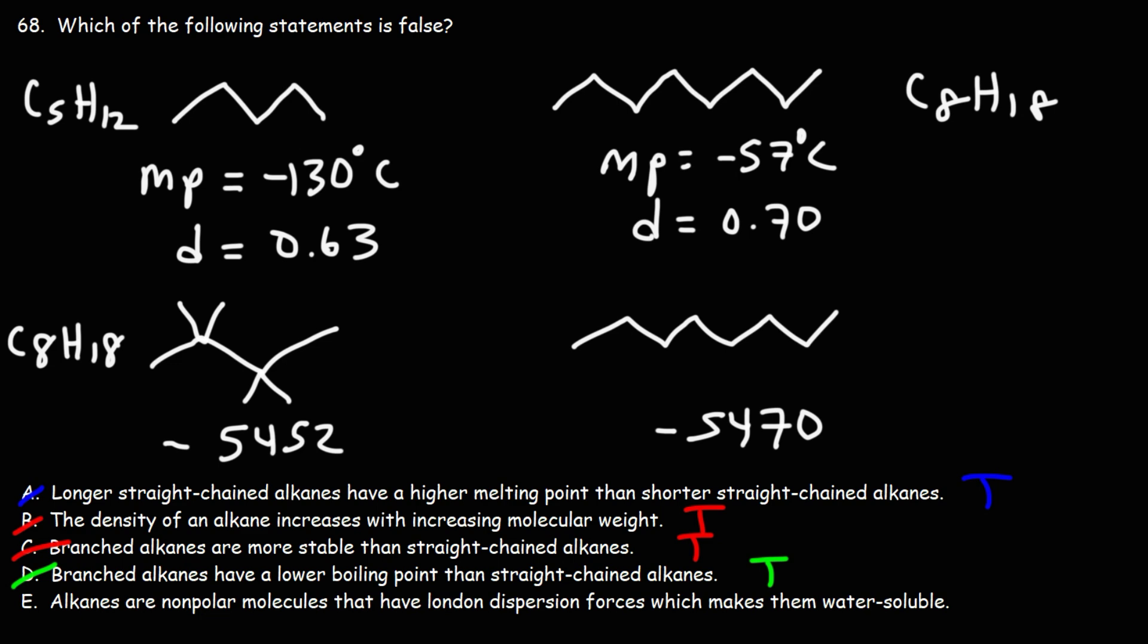The boiling point for 2-2-3-3 tetramethylbutane is 107 degrees Celsius. For octane, it's 126 degrees Celsius. So we can see that this particular branched alkane has a lower boiling point than the straight-chain alkane.